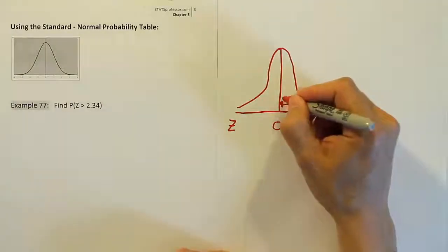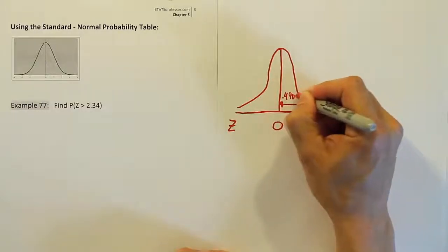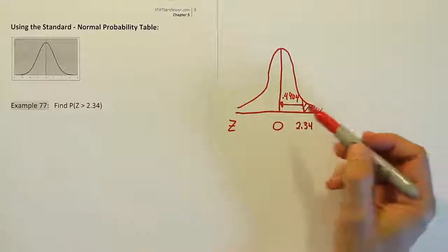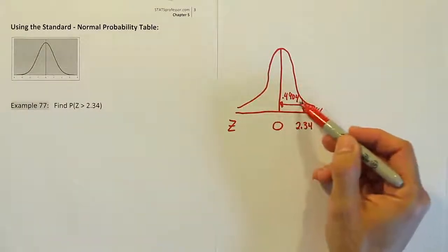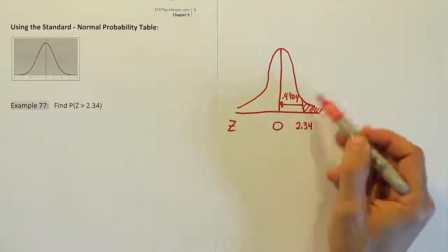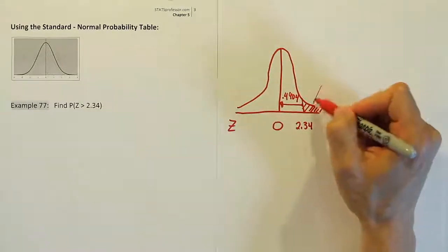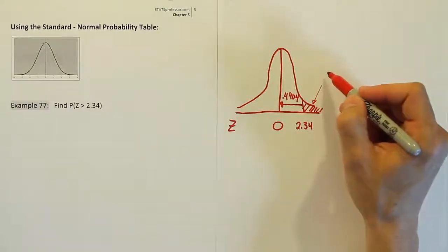We found the answer 0.4904 from the table. But remember, that area belongs here because that's what the table gave us. It's not the shaded space, so we don't have the answer that we want. In order to find this answer, we're going to need to do a simple trick.